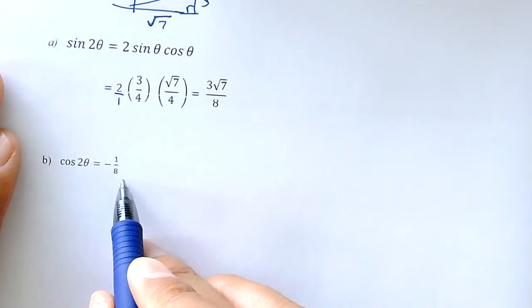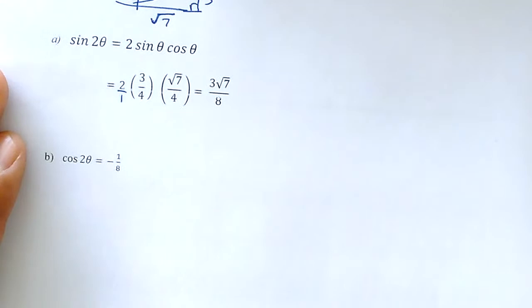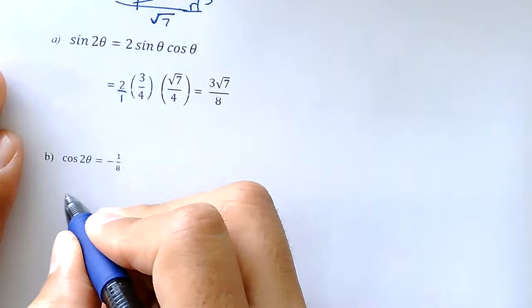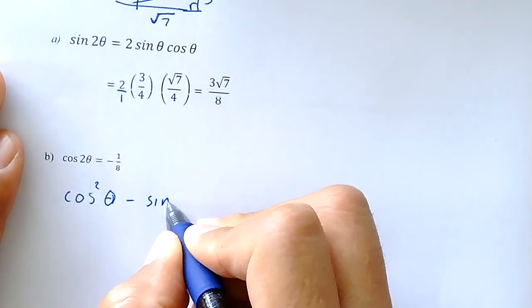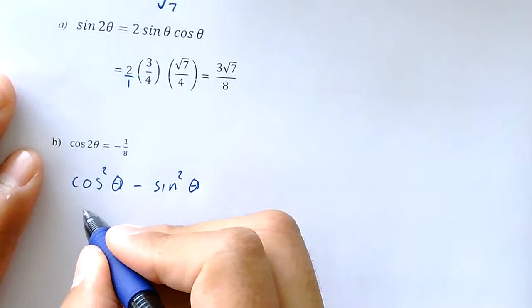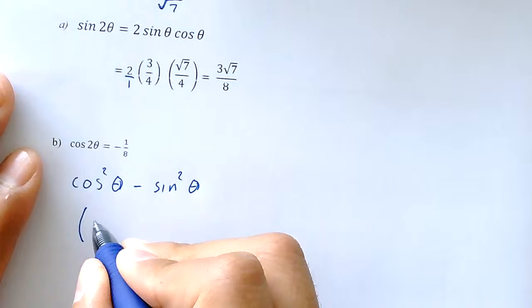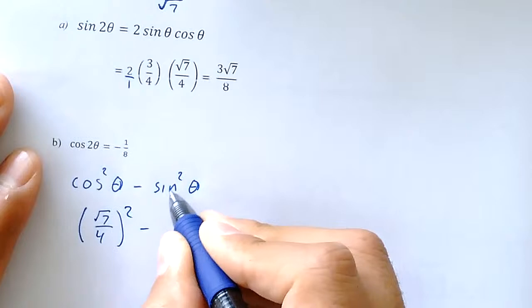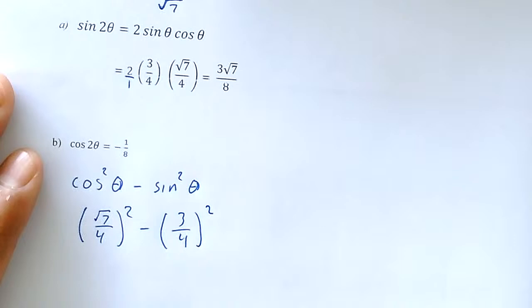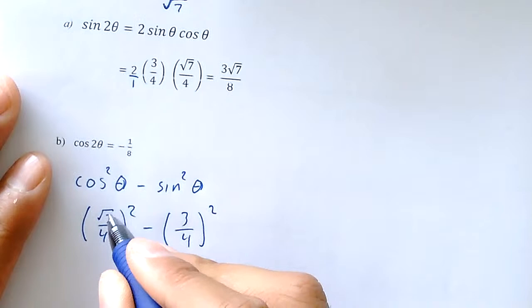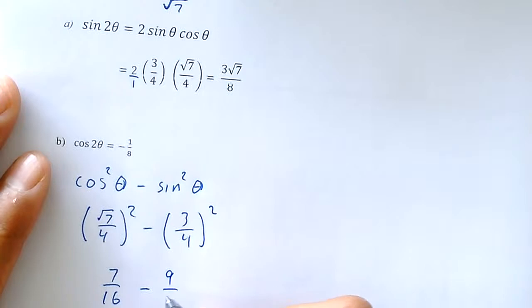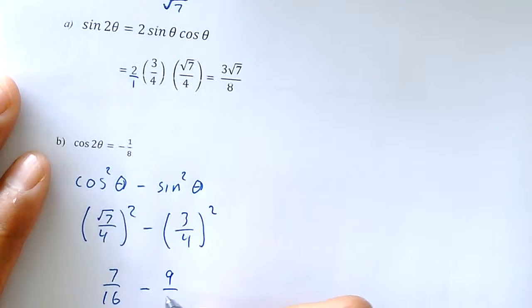For the cosine of 2 theta, I have several formulas to pick from. I'm going to use 2 cosine squared minus 1 because I like that one — it gets rid of the radical. The cosine was the square root of 7 over 4, so I need to square it. That gives 7 over 16. Then 2 times 7 over 16 minus 9 over 16. Subtracting gives negative 2 over 16, which reduces to negative 1 over 8.